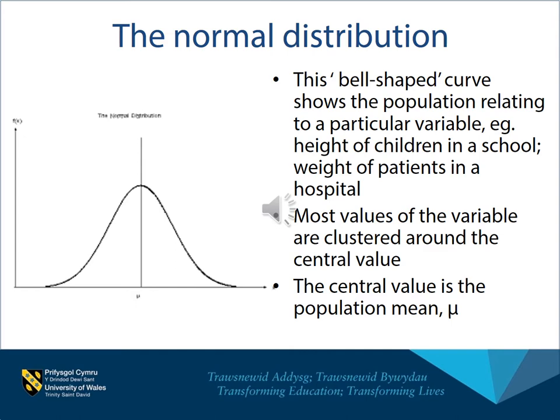In terms of the actual mathematics involved, a lot of inferential statistics are based on what we would call the normal distribution. This means the normal way in which different values are arranged within a population. You may well have come across this bell-shaped curve which shows the normal way in which values are distributed amongst a particular variable.